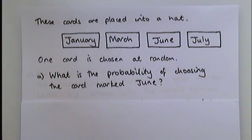There are four cards that are marked January, March, June and July. One of the cards is chosen at random. What's the probability of choosing the card marked June?